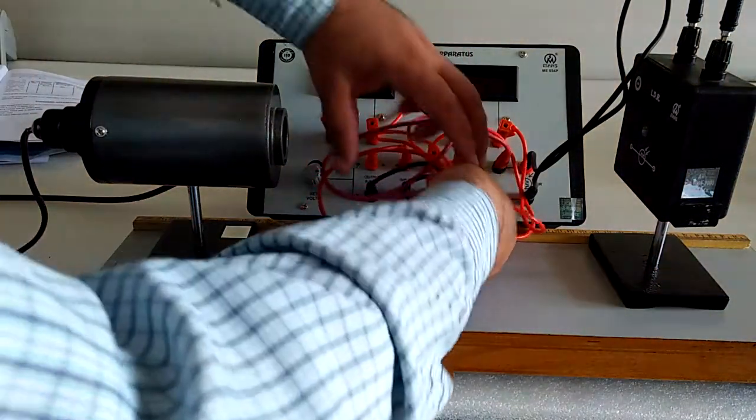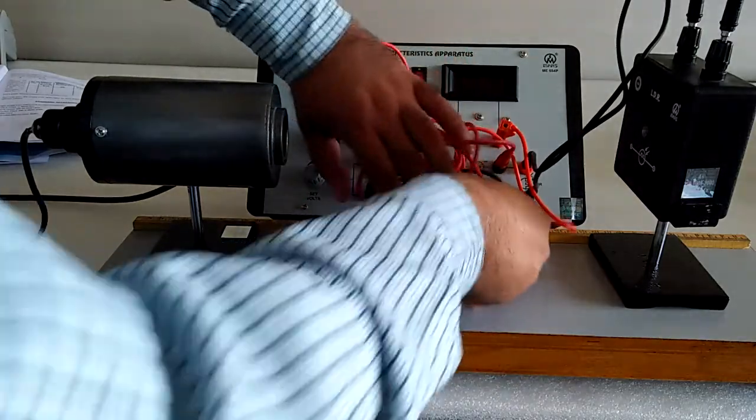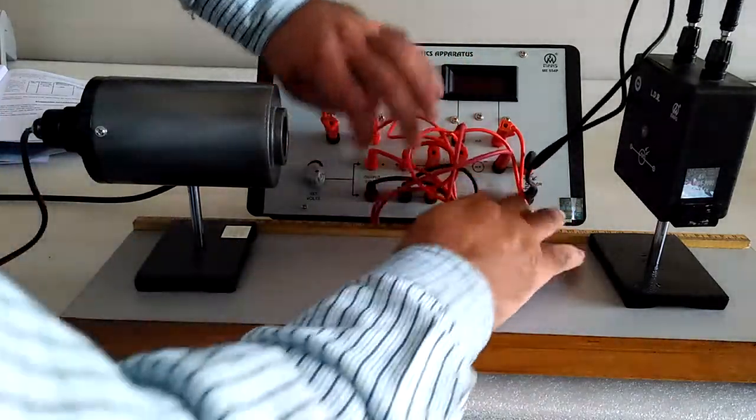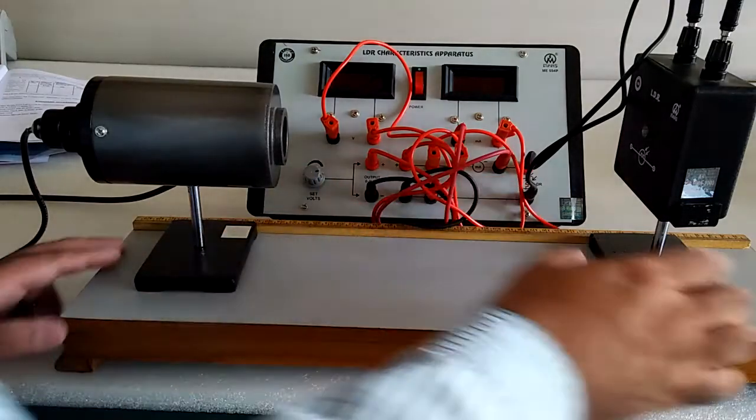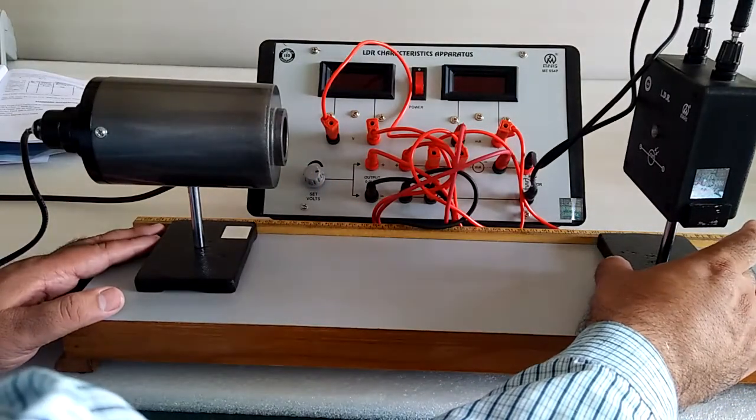Place the bulb for the light source in front of the LDR. Here we mark the distance between them.